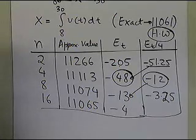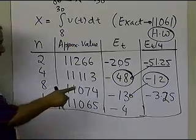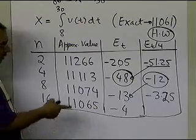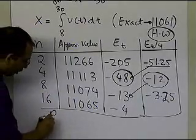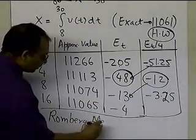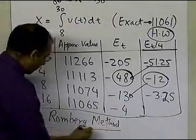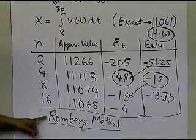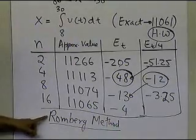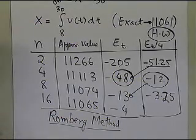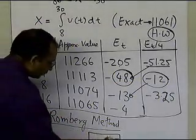This result becomes a constant as n becomes very large. The practical advantage of understanding this error behavior is that it forms the basis for the Romberg method, which uses the knowledge that the error gets quartered to develop a much better integration method — essentially an extrapolation method — for finding the value of integrals. That is the end of this segment.